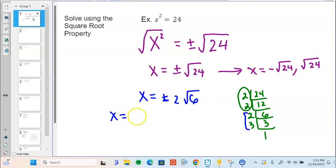So, we have the two solutions. Negative 2 square root of 6 and positive 2 square root of 6. And those are our solutions.